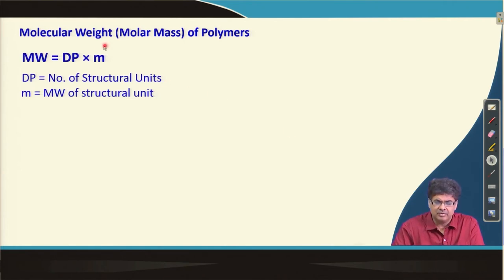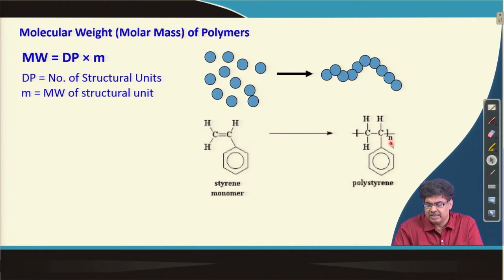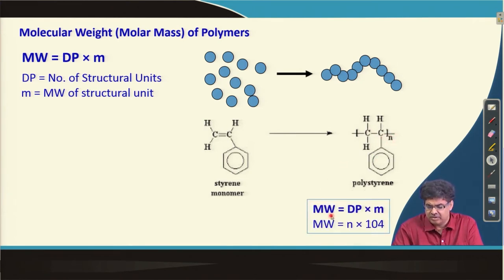We also know the relationship between degree of polymerization and molecular weight from earlier lectures. For polystyrene, where n is the number of repeat units (degree of polymerization), molecular weight equals degree of polymerization multiplied by the molecular weight of the repeat unit — n multiplied by 104, which is the molecular weight of the styrene repeat unit.